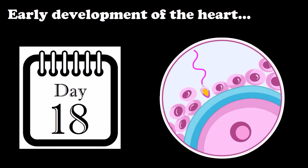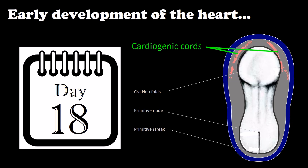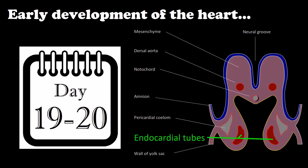The embryonic development of the cardiovascular apparatus begins 18 days after fertilization, when the primary heart field forms from the trilaminar embryonic disc's cranial portion of the mesoderm. This field then compacts itself until it forms two parallel threads called cardiogenic cords. Once these cords are established, two cavities inside them develop, giving origin to the endocardial tubes.